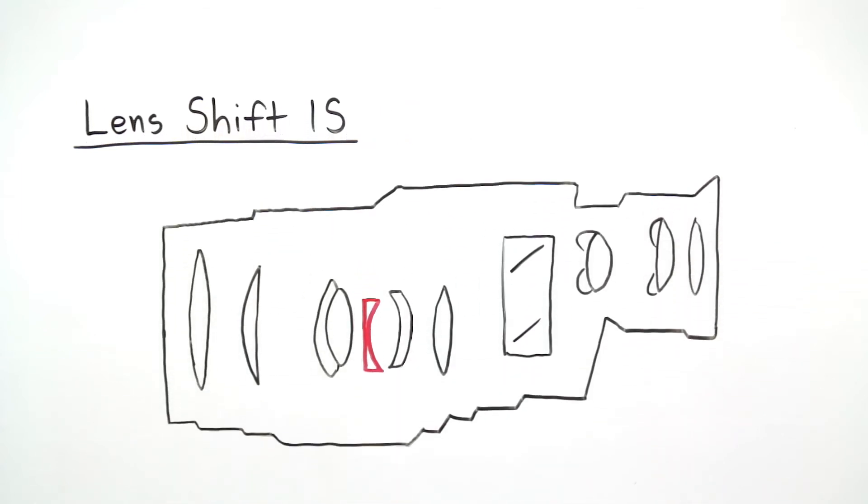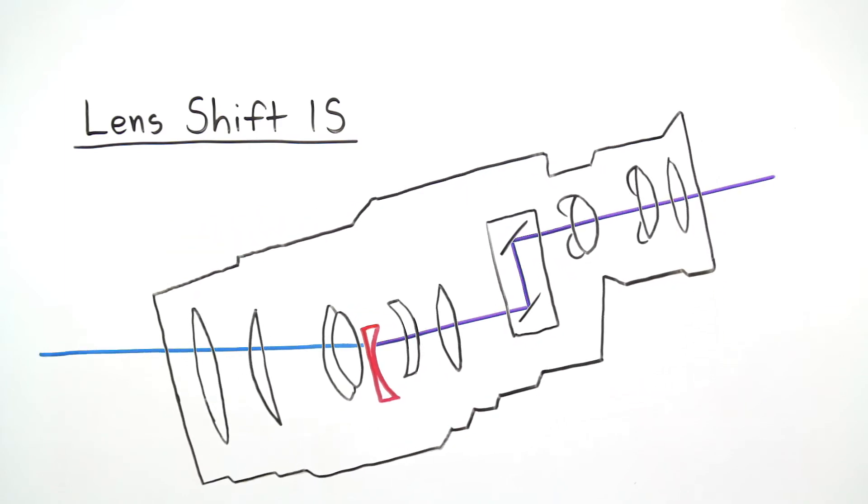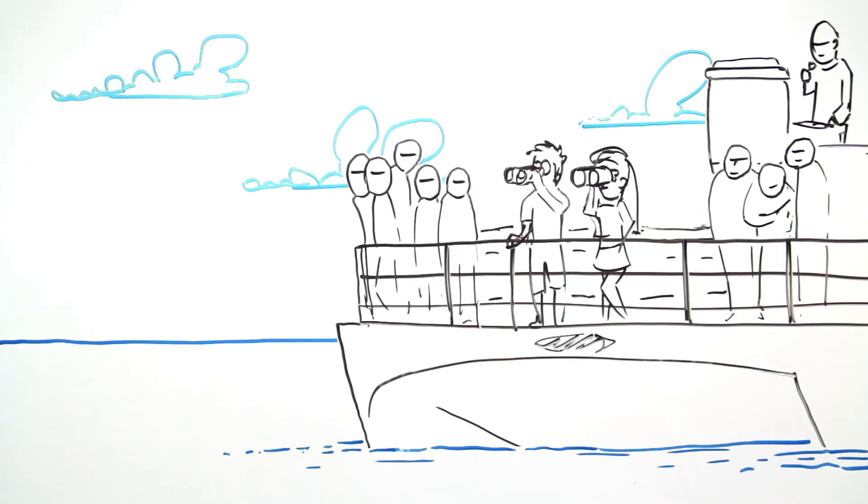which uses a continually adjusting gyro mechanism that moves the correction lens both vertically and horizontally to deliver sharp images even in the most unstable environments.